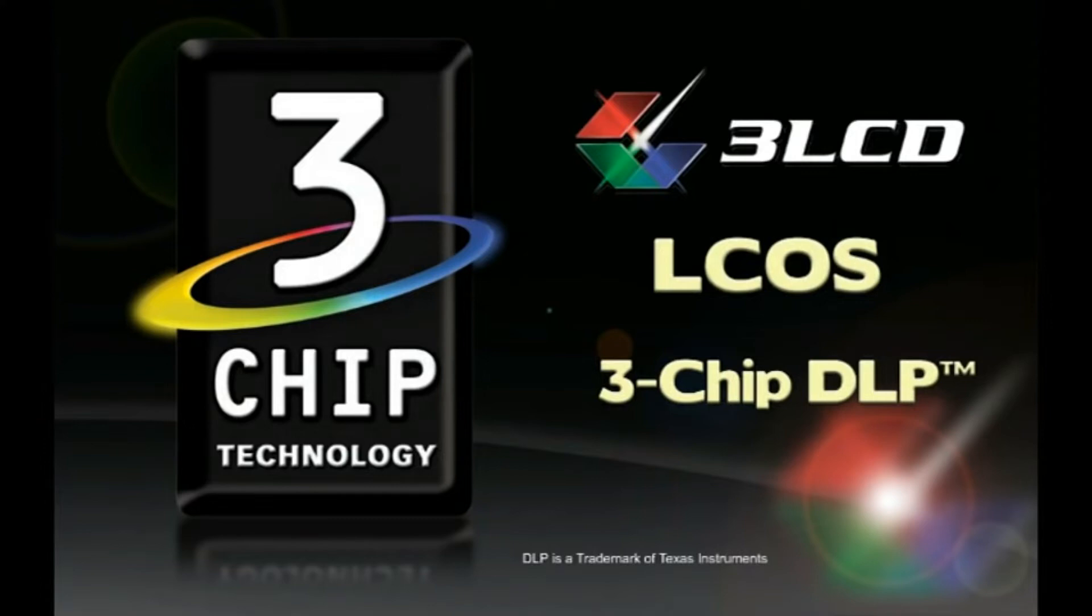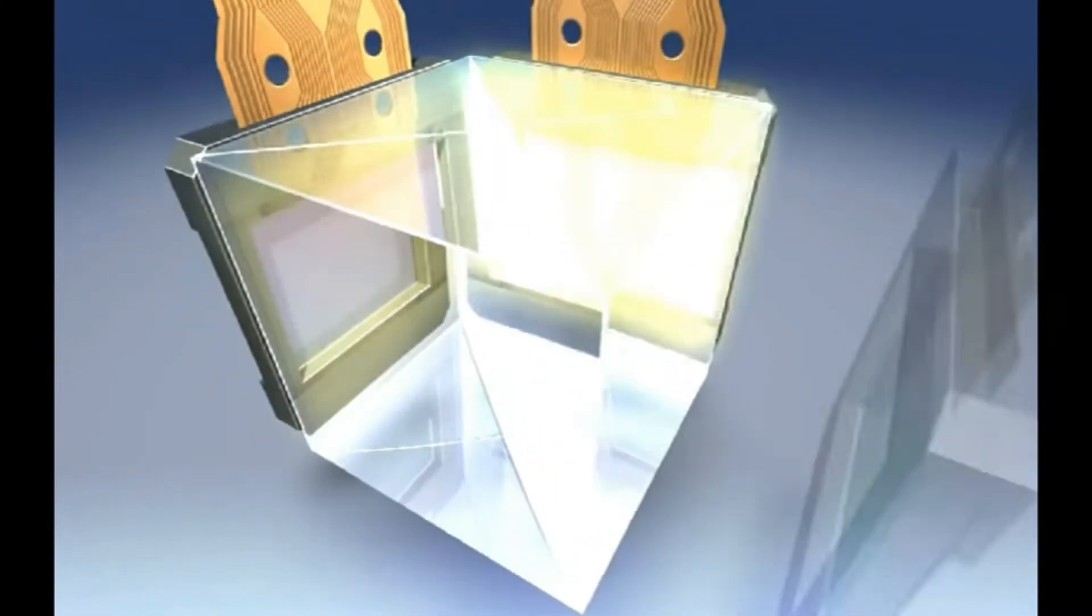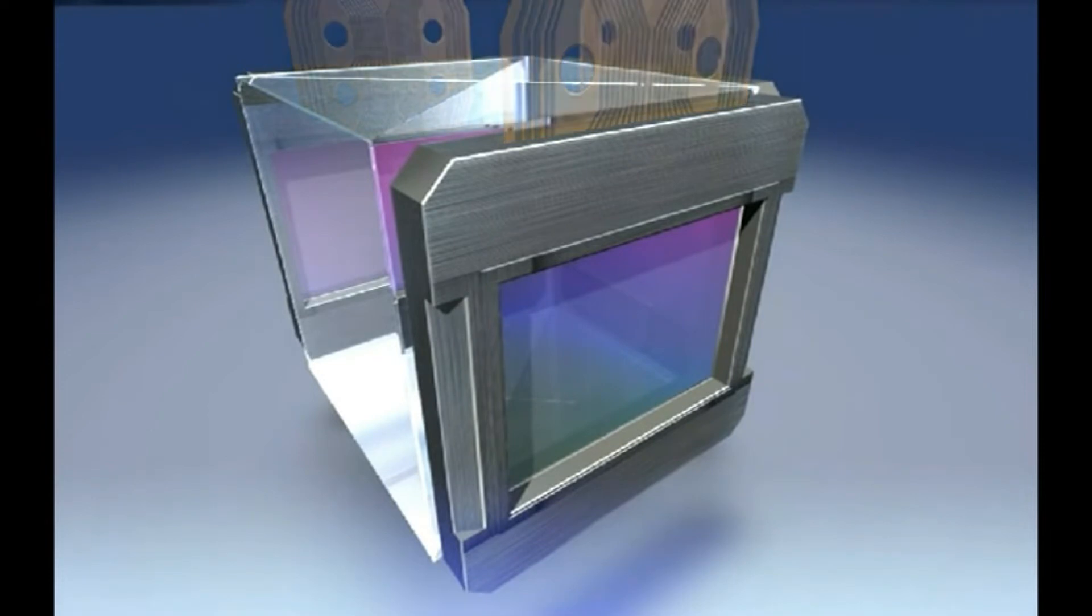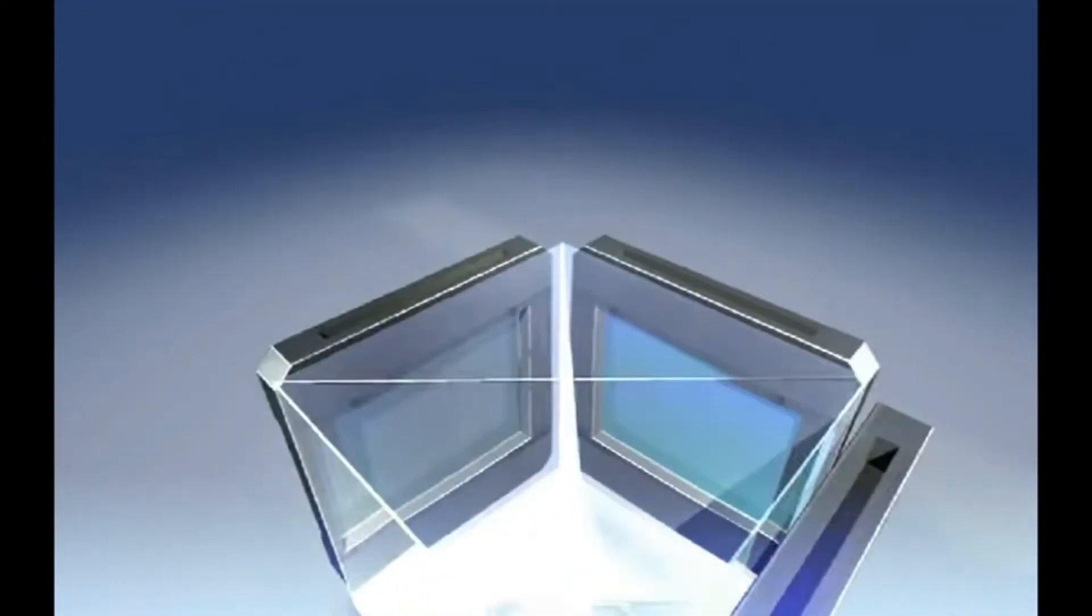At the heart of 3LCD is a prism and the three liquid crystal chips. The three discrete LCD chips produce clear, colorful images and make the 3LCD system light efficient.